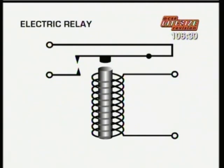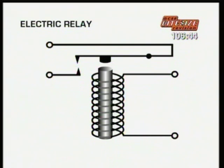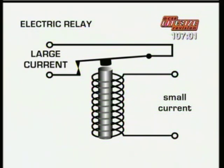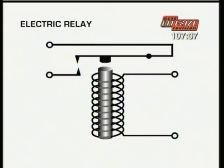Another useful application of an electromagnet is in a relay. A relay is a switch that's operated by an electromagnet. They're often used for safety reasons to operate switches at a distance from the operator. They can also use a small current to control a large current. When a small current flows in the relay, it activates the electromagnet, which pulls the large switch closed and lets a larger current flow into the other circuit. When the small current in the relay is switched off, it releases the electromagnet, which opens the large switch and stops the larger current.